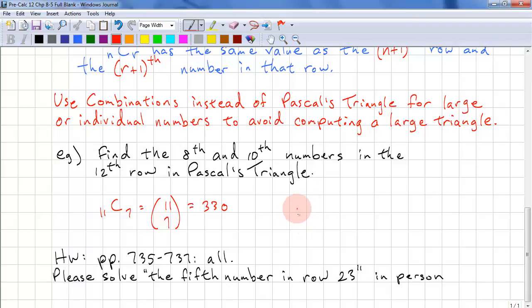For our second number, we have 11 choose 10 minus 1. That's 9. So that's 11 choose 9, and that's equal to 55.